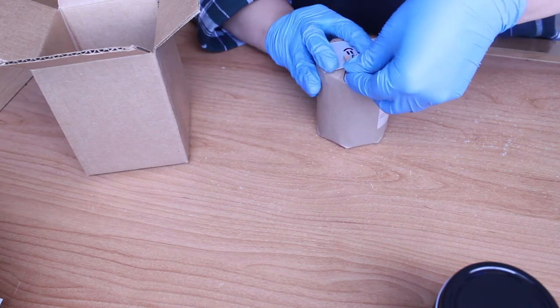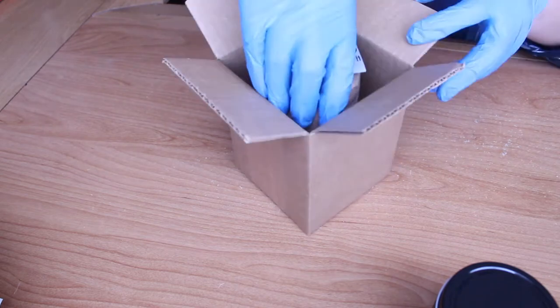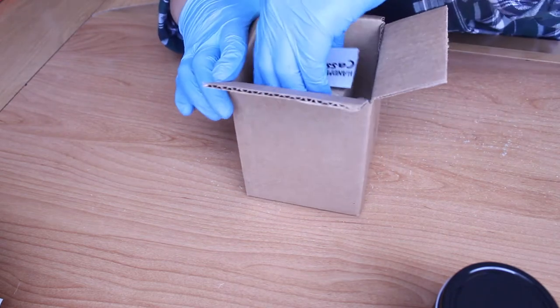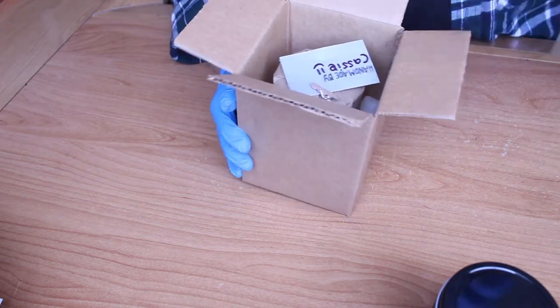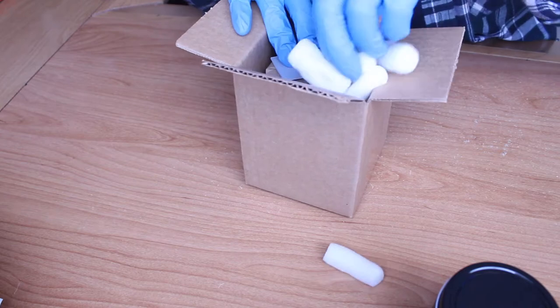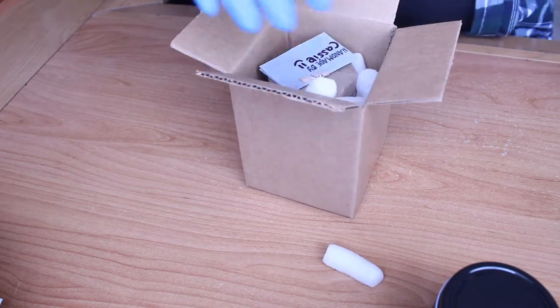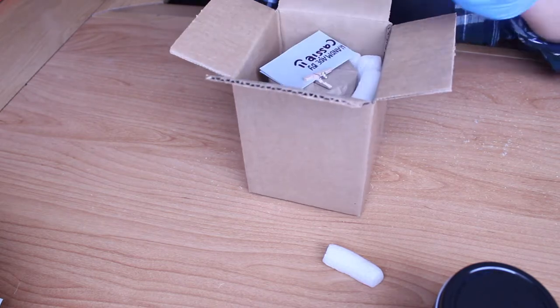I'll just go ahead and shove that in there and I will toss the candle in. You want to shove it down so it's nice and tight on the bottom, and then you want to begin filling the sides with more peanuts. You want them on all sides of the candle—you don't want them all just on one side shoving it to the other, because you want it to be protected on all sides.